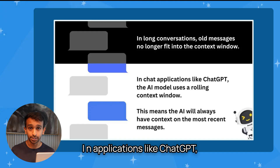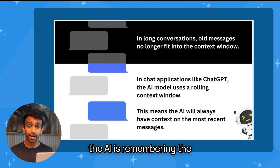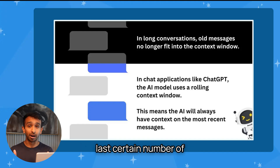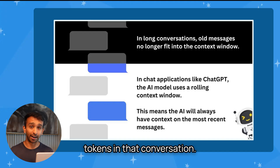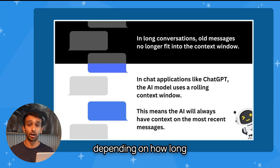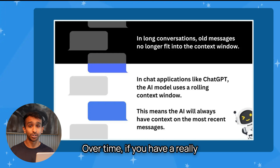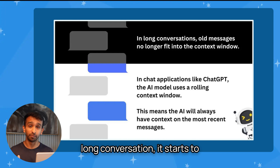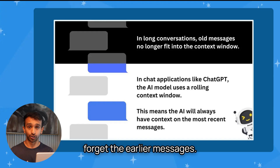In applications like ChatGPT, the AI is remembering the last certain number of tokens in that conversation — maybe the last few messages depending on how long the conversation is. Over time, if you have a really long conversation, it starts to forget the earlier messages.